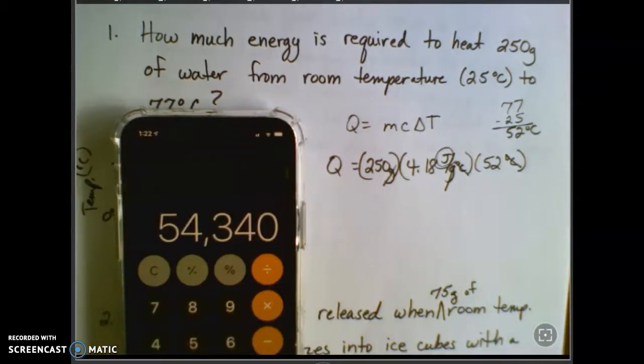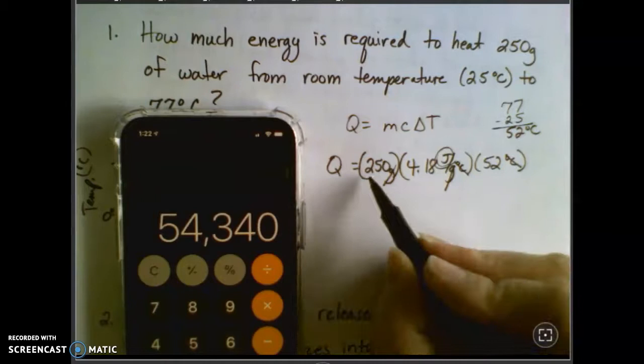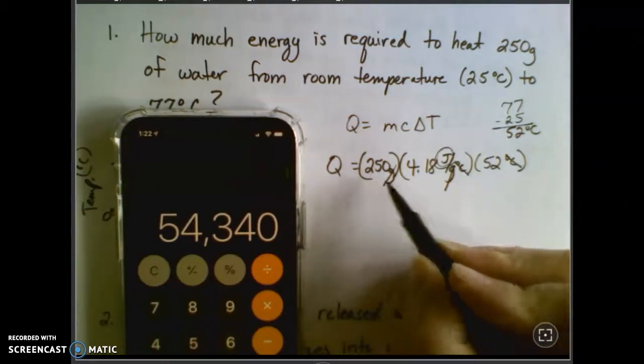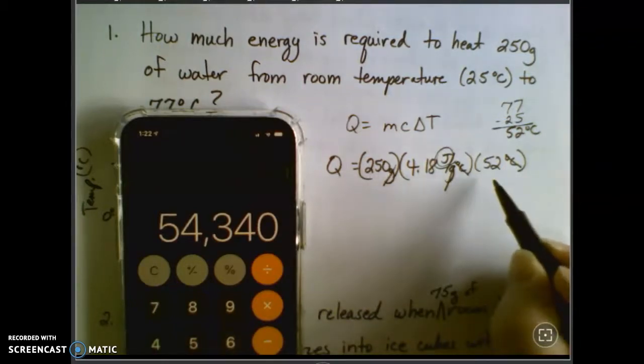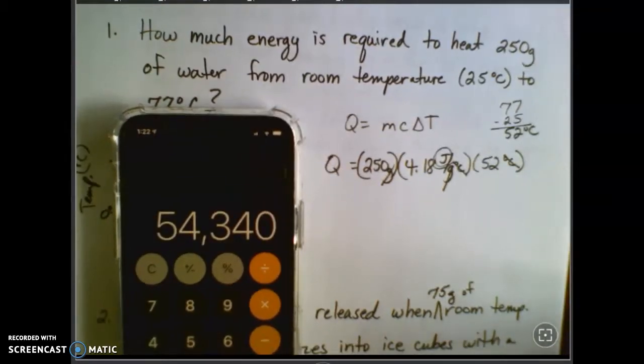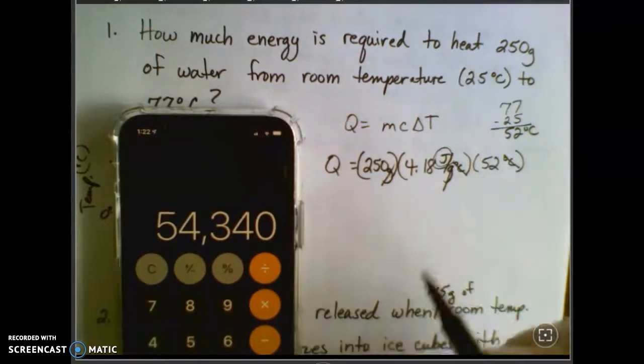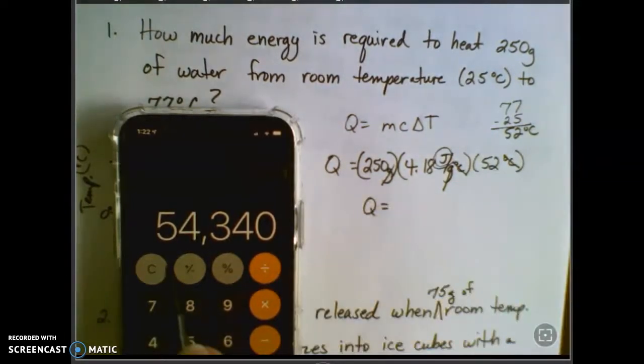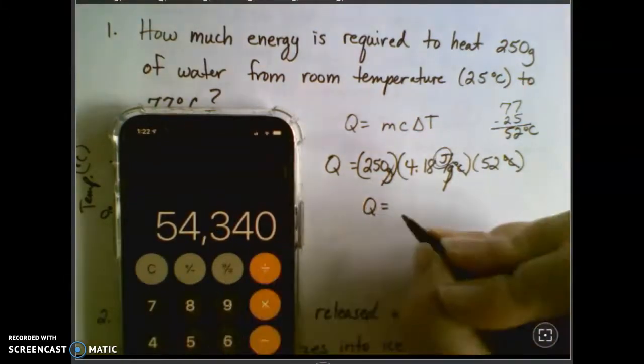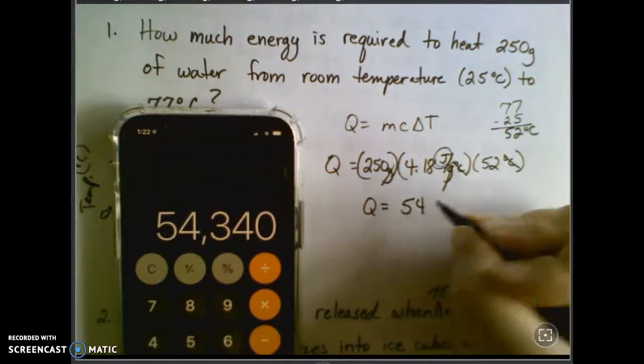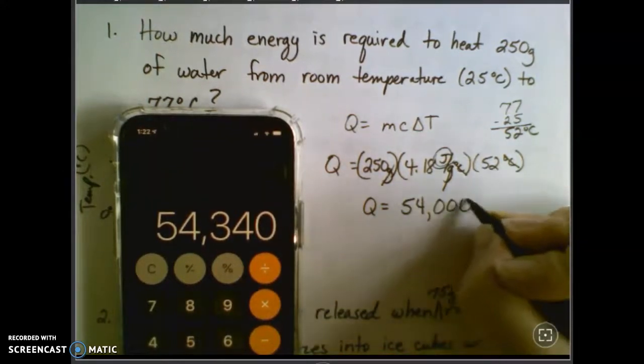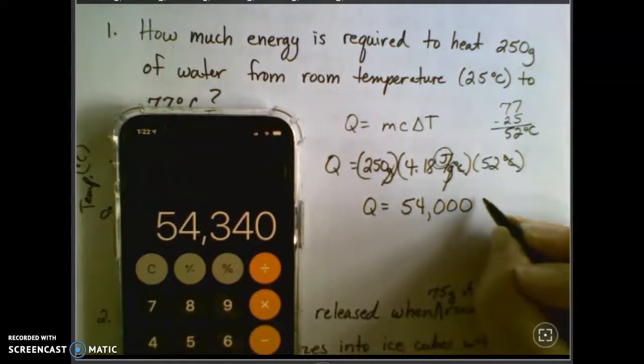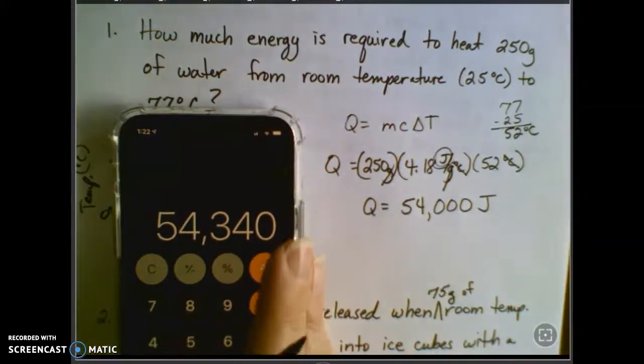Now, your favorite thing, those sig figs. If I look at my numbers, this just has two sig figs. That has three. That has two. So I've multiplied. So I'm using my least number of sig figs in any of those numbers that I've multiplied together. So my final answer here is just going to be rounded to two significant figures. So that's 54. That's a three. So it stays a four there. And then these last zeros become placeholders. So the answer is 54,000 joules.